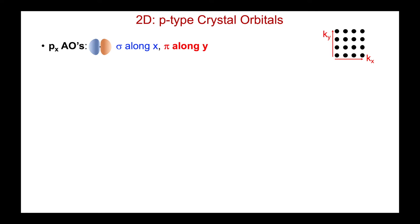Let's see if we can handle p orbitals, because things get slightly tricky. For 2D p-type crystal orbitals, defining the plane of our square lattice as the xy plane, for the px atomic orbitals I'm going to be sigma along x — we've already seen that. Whether bonding or anti-bonding will depend on the sign changes. But along the y direction, as I stack them up in 2D, we're going to see it's pi. Let's take a look.